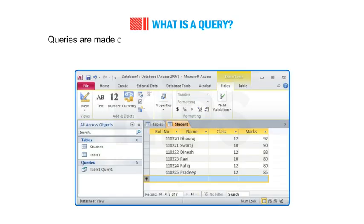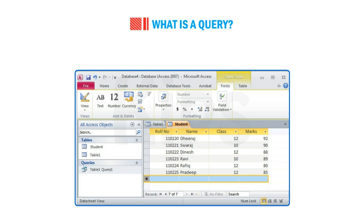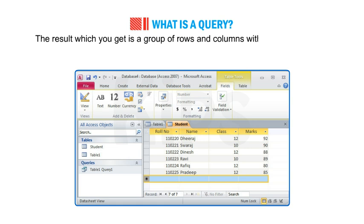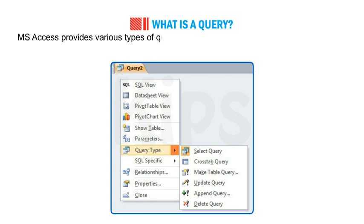Queries are made on tables and the result of a query is also displayed in the form of a table. The result you get is a group of rows and columns with a set of records that matches the given condition. MS Access provides various types of queries.